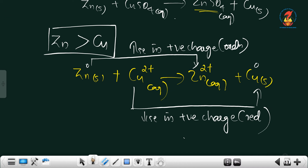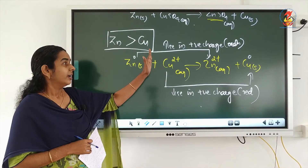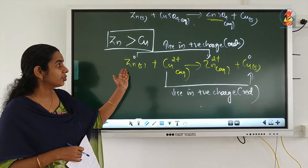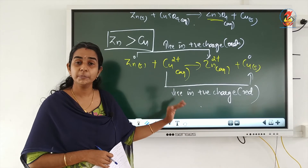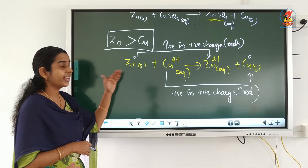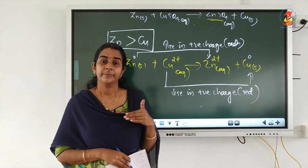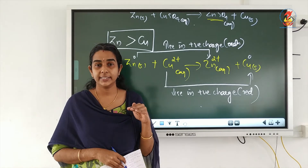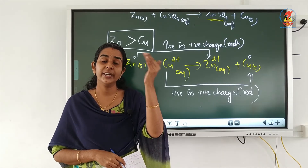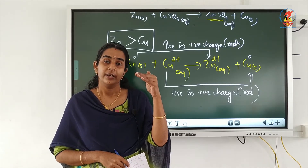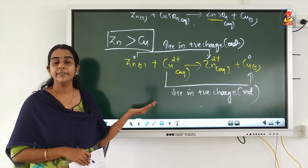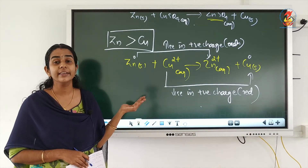This is what we explained in the previous video: if there is oxidation, simultaneously there will be reduction. Whichever species is losing electrons, there will be another species to accept those electrons. This reaction mainly depends on the order of reactivity of the metals used — displacement reaction occurs only if the metal dipped in the salt solution is more reactive.